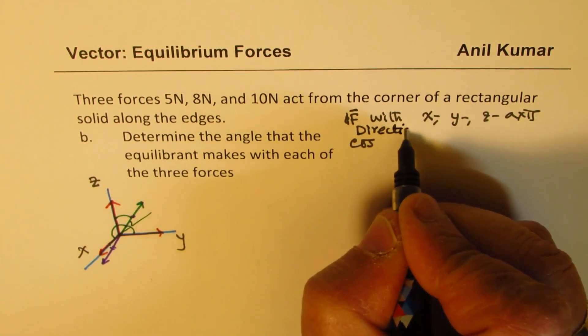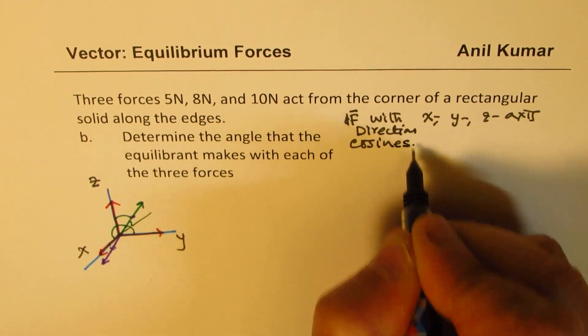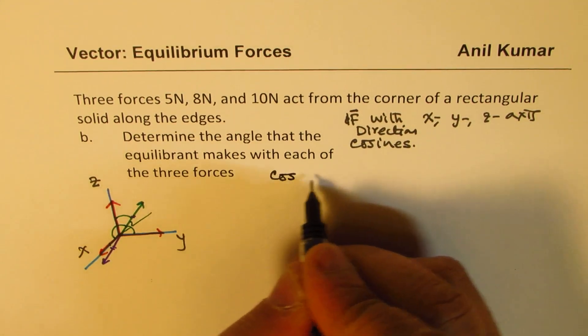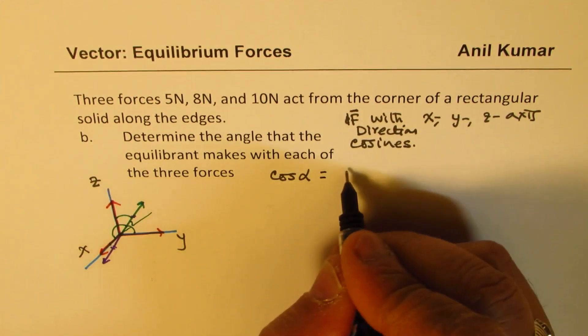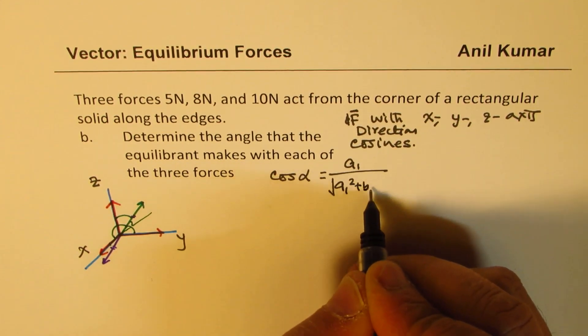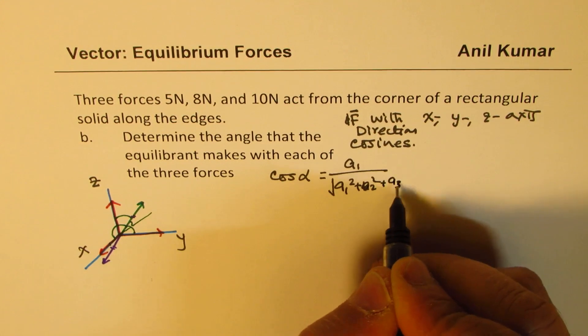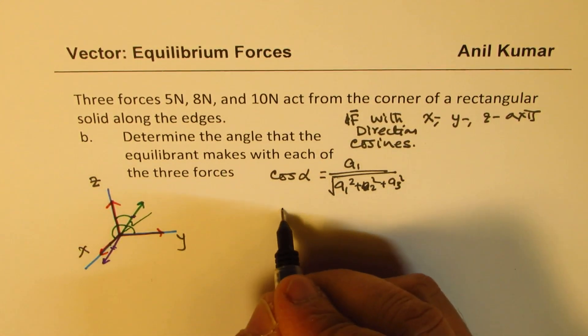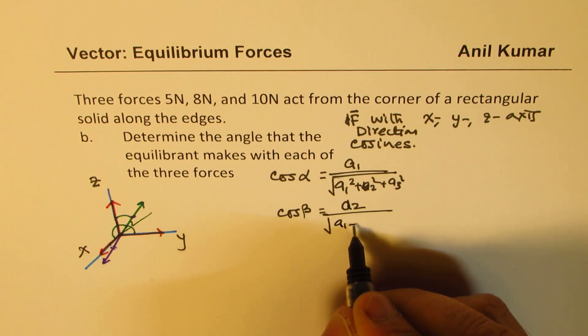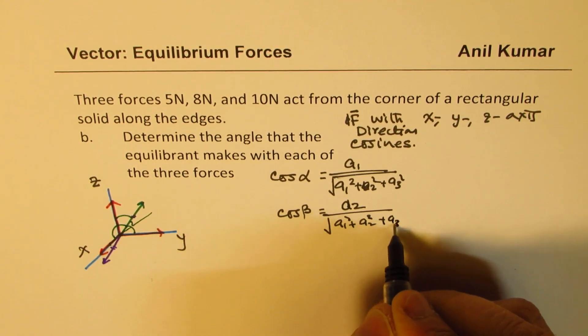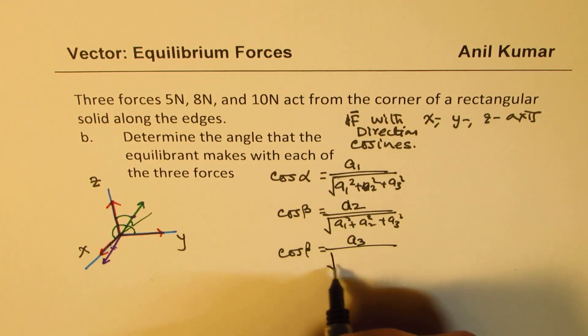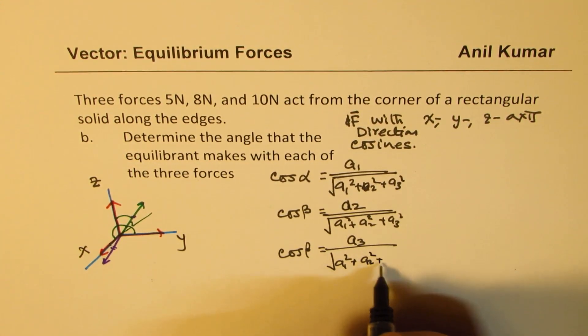Is that clear? So you can use the direction cosine formula to find this. The formula is: cos of alpha, the angle which the force makes with x axis, is equal to a1 over square root of a1 square plus a2 square plus a3 square. Similarly you have cos of beta equals a2 over square root of a1 square plus a2 square plus a3 square, and cos of gamma equals to a3 over square root of a1 square plus a2 square plus a3 square.